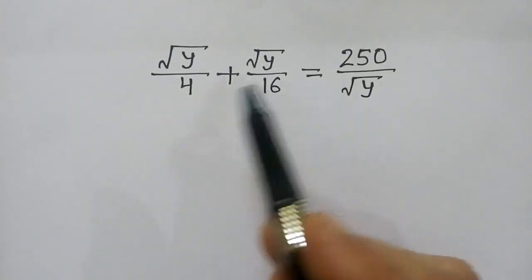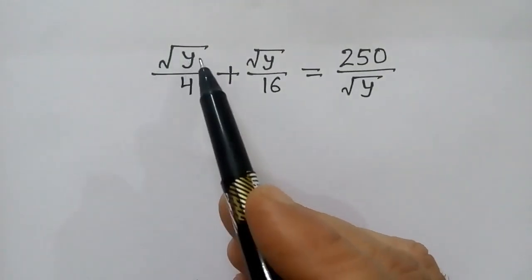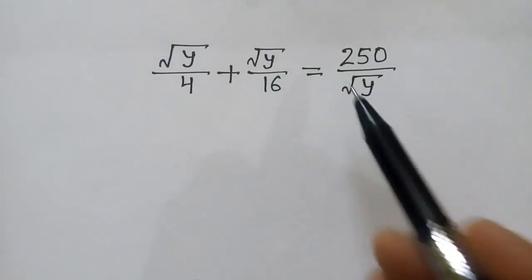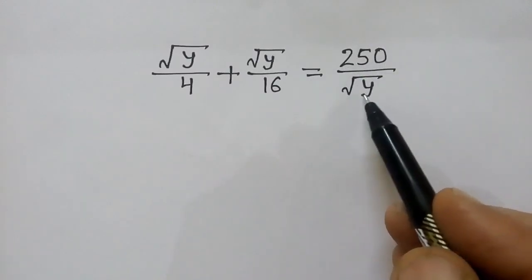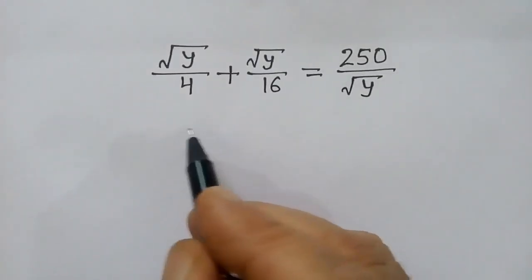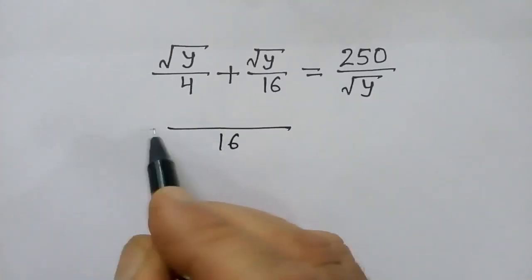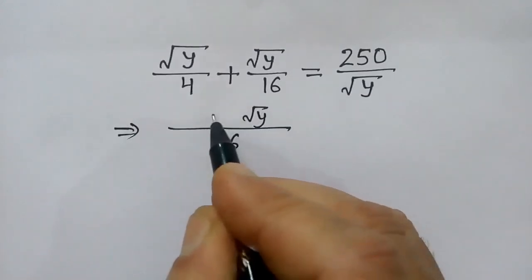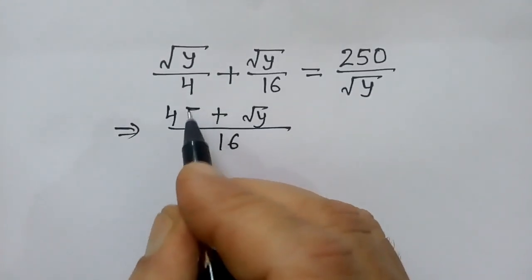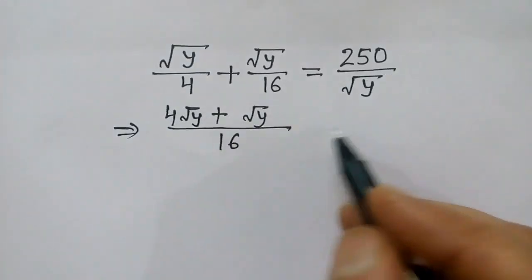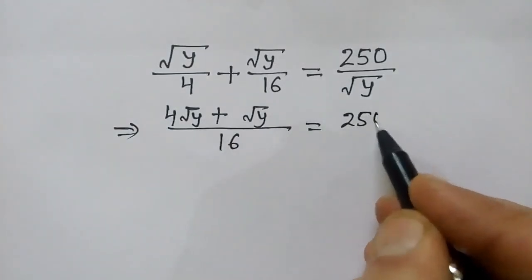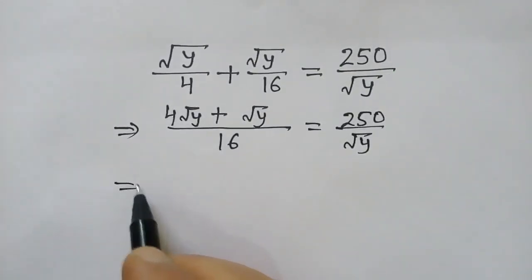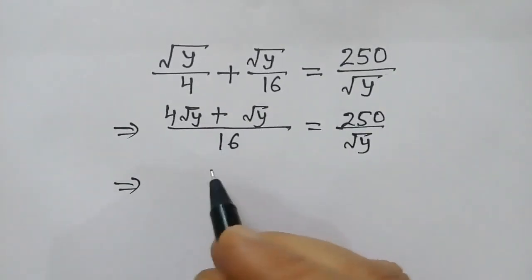We have to solve this equation: square root of y over 4 plus square root of y over 16 is equal to 250 over square root of y. Taking 16 as the LCM, we get square root of y plus 4 square root of y over 16, which equals 250 over square root of y.